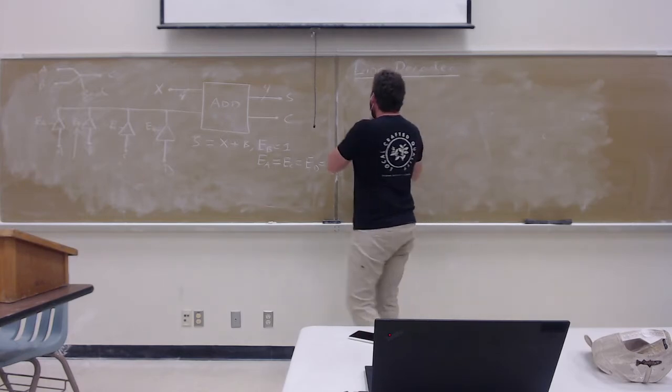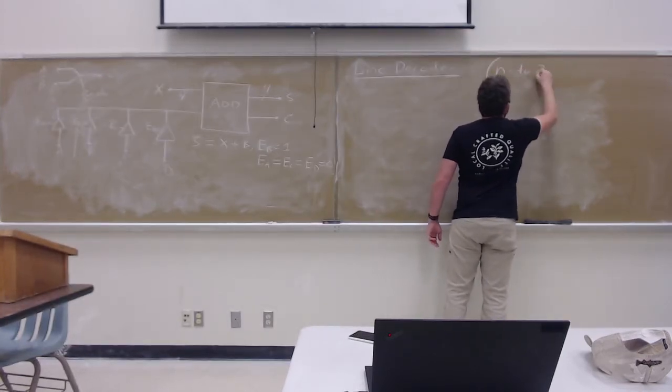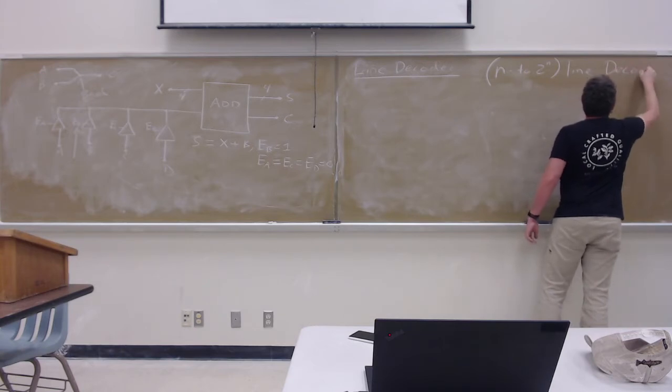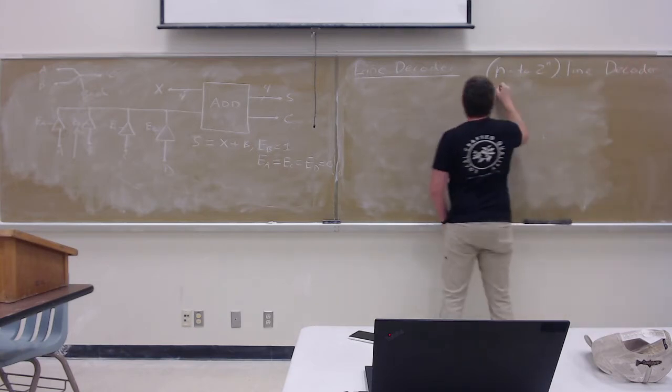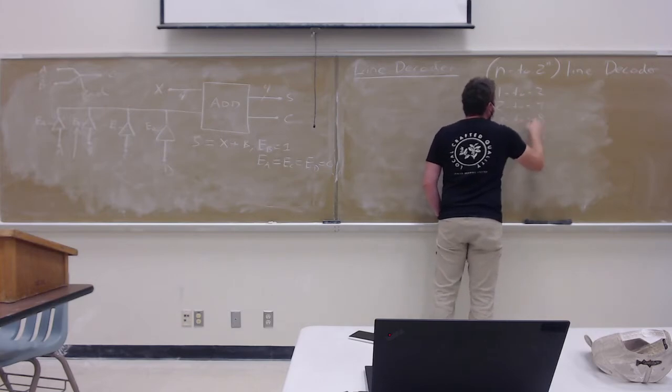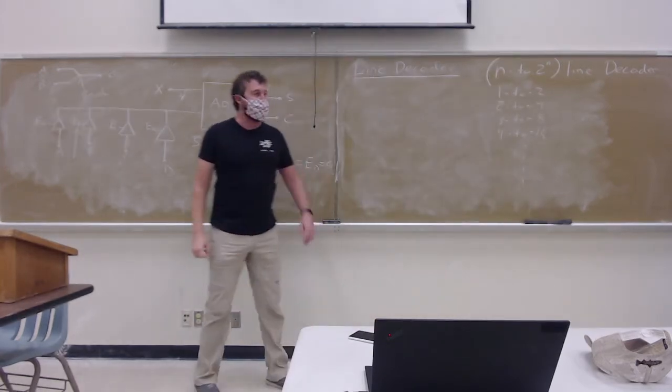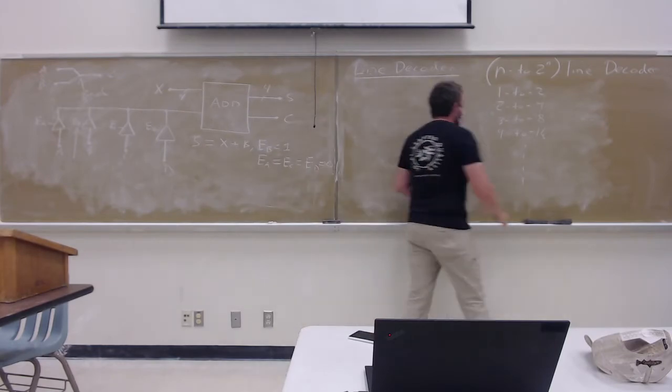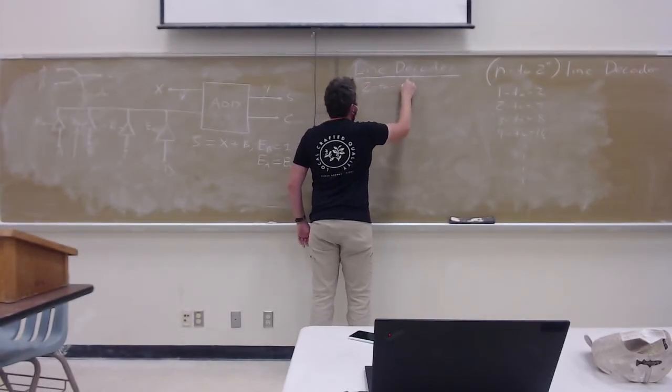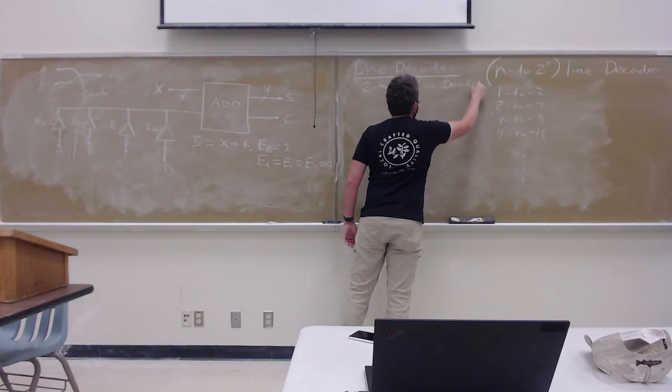And it's called a line decoder. They come in all sorts of shapes and sizes. Traditionally, we say something like this: an N to 2 to the N line decoder is how we size them. So, you would have a 1 to 2, a 2 to 4, a 3 to 8, a 4 to 16, and so on. So, let's take a look here to make it easy at a 2 to 4 line decoder. Although, the operation is the same for all of the rest of them.